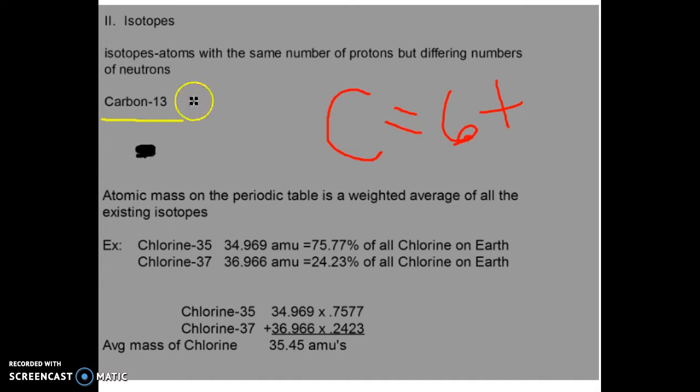Carbon-13 has six protons because it's carbon, but if it has an atomic mass of 13, it must have seven neutrons. So it's still carbon, but it has some slightly different properties. We can actually calculate the average atomic mass of all the known isotopes of an element, but some isotopes are really rare. When we calculate the average, we calculate a weighted average. The atomic mass on the periodic table is actually a weighted average of all the existing isotopes of a particular element.